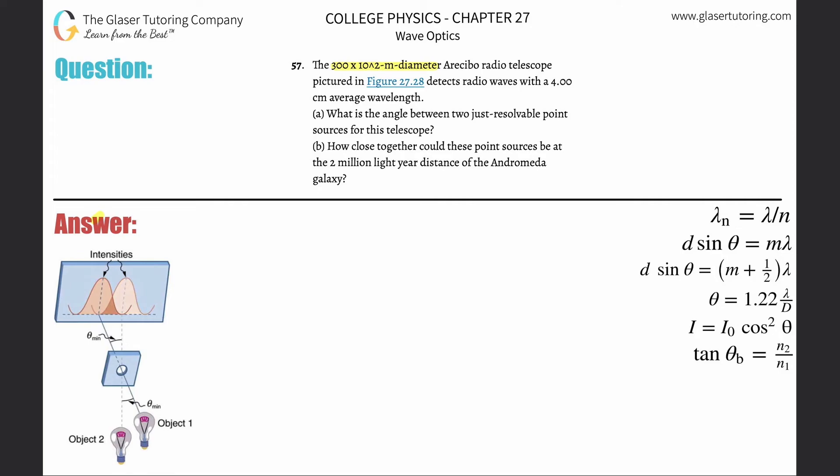Number 57. The 300 times 10 to the 2 meter Arecibo radio telescope pictured detects radio waves with a four centimeter average wavelength. Letter A: what is the angle between two just resolvable point sources for this telescope?